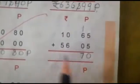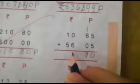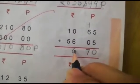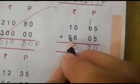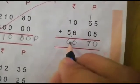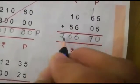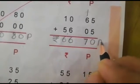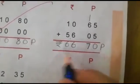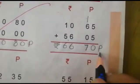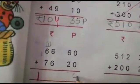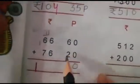5 plus 5 is 10, carry 1. 0 plus 6 is 6, and 1 makes 7. We will write here: rupees and paise — 66 rupees and 70 paise. Next: 0 plus 0 is 0, 6 and 2 gives us 8.